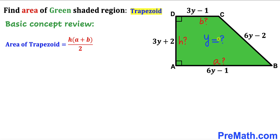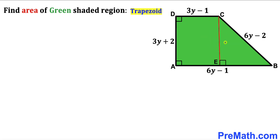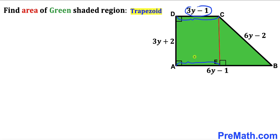Before we can find these values, we must find the value of Y. I have dropped a perpendicular CE onto line AB, resulting in right triangle BEC. We can observe that segment CD equals segment AE in rectangle AECD, and since CD is represented by 3Y minus 1, segment AE is also 3Y minus 1.